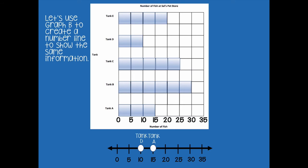Now we're going to plot the actual data points on the number line. The smallest number is 10 — that's tank D — so label a dot above 10 and write tank D. My next one is tank A at 15. Label the rest: tank E is at 20, tank C is at 25, and tank B is at 30. Does yours match? Today we've talked about vertical tape diagrams, scaled bar graphs both vertical and horizontal, and displaying information on a number line — four different ways to show the same data.